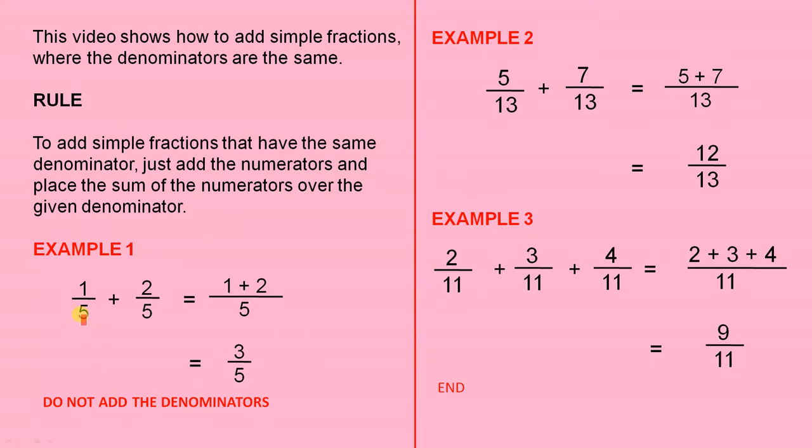Now the given denominator is 5. See there's a 5 here and a 5 there. So that's the given denominator that we're talking about. There's one numerator and there's the other numerator.